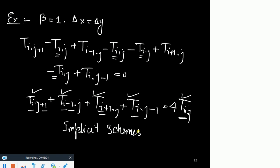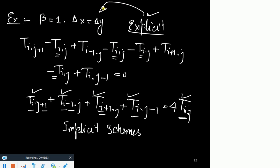In the case of unsteady heat transfer, there are schemes where you find out temperature at all unknown points at the same time step without needing information about other points simultaneously — those are explicit schemes. Explicit schemes put some restriction on the size of delta x, delta y, and delta t as well. Implicit schemes have no such restriction — it is only the accuracy that is affected, not the stability.